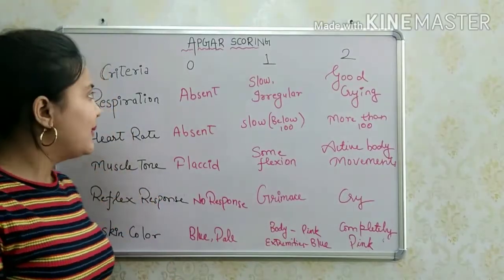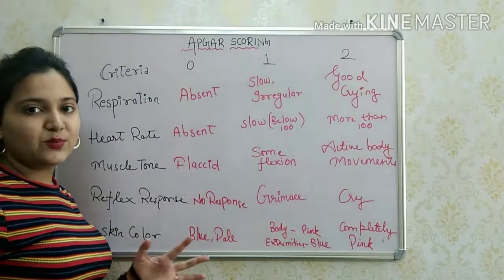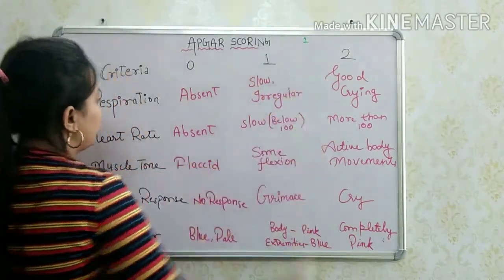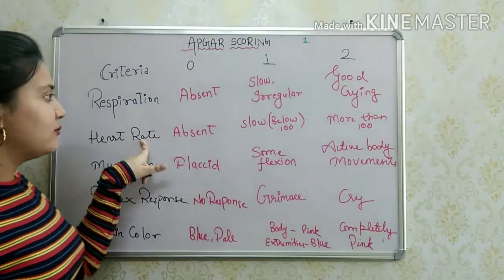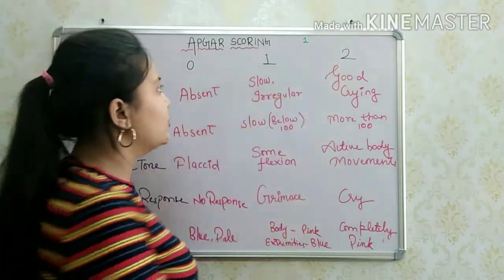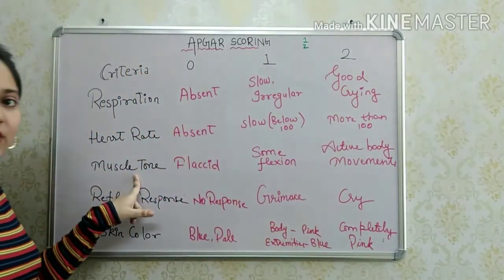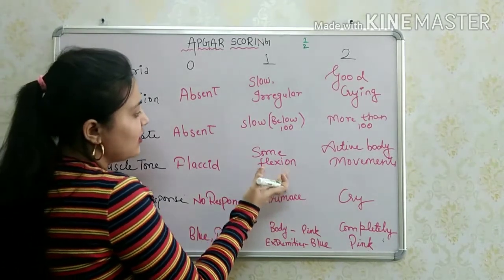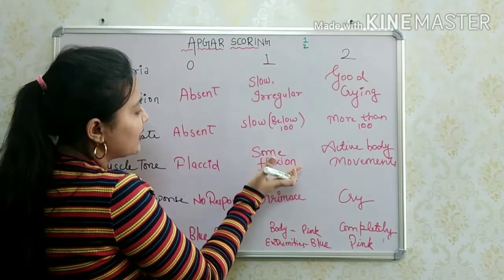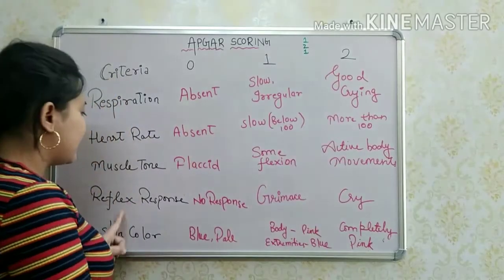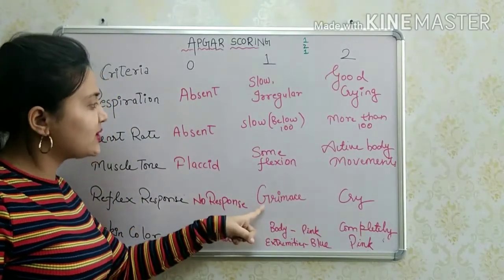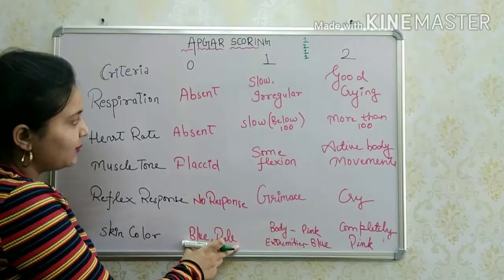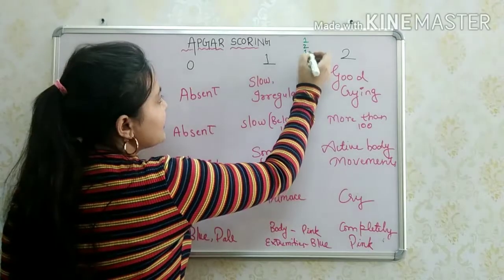Let's look at an example. If a baby's respiration is slow and irregular, we score 1. The heart rate is more than 100, so we score 2. For muscle tone, we see some flexion in the extremities with a little body movement, so we score 1. Reflex response is a grimace, so we score 1. Skin color is blue and pale, so we score 0.